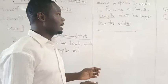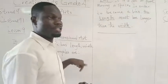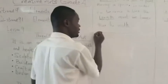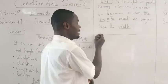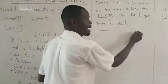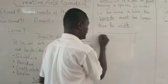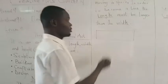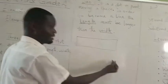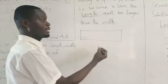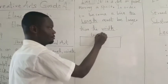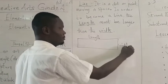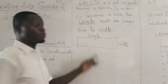Look at it — one side will be longer than the other. When we are drawing the third dimension, if I draw a box, a rectangle, look at it, one side will be longer than the other. You see that this side is longer than this side. That's what we are talking about — the length.